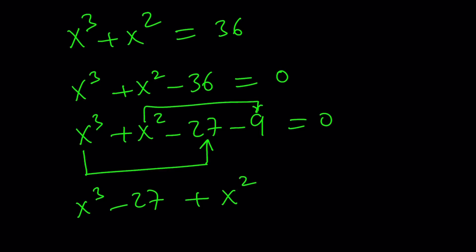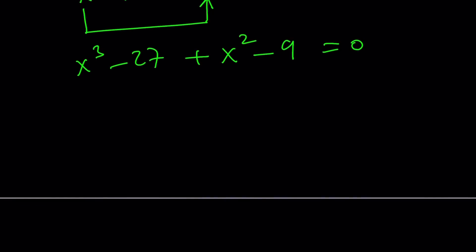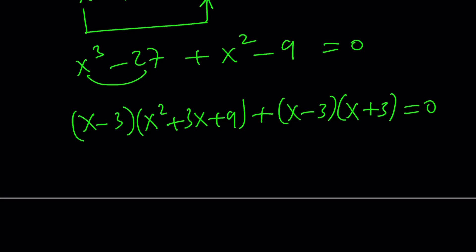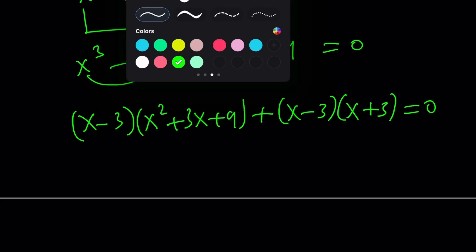So now this can be factored as x minus 3 multiplied by x squared plus 3x plus 9. And from difference of two squares, this is x minus 3, x plus 3 equals 0. Now x minus 3 is a common factor, so we can go ahead and take it out.